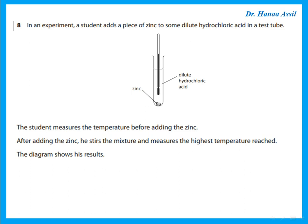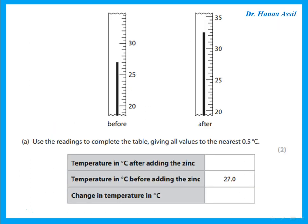Question 8: in an experiment, a student adds a piece of zinc to some dilute hydrochloric acid. The student measures the temperature before adding the zinc, then stirs the solution and measures the highest temperature. The temperature after adding the zinc, reading from the thermometer, is 32.5. The temperature before was already written as 27.0, so the change — the difference between them — is 5.5.